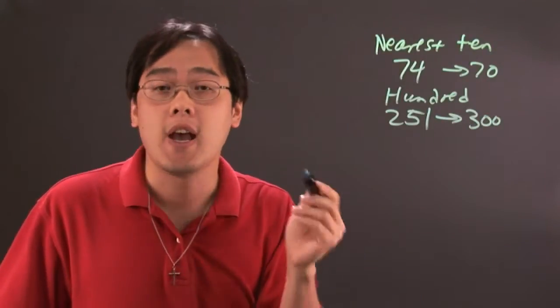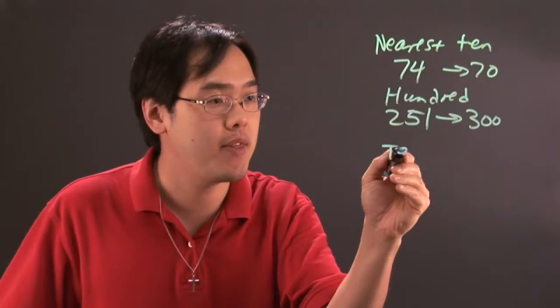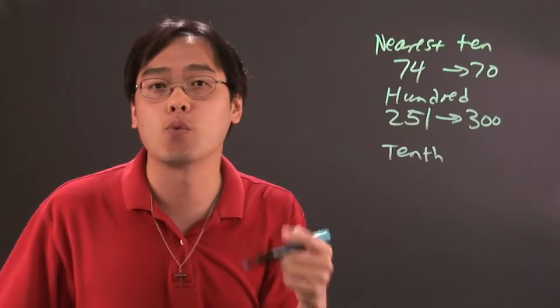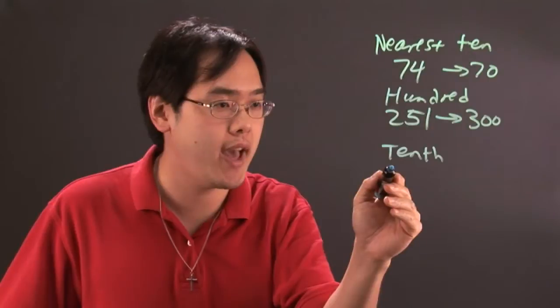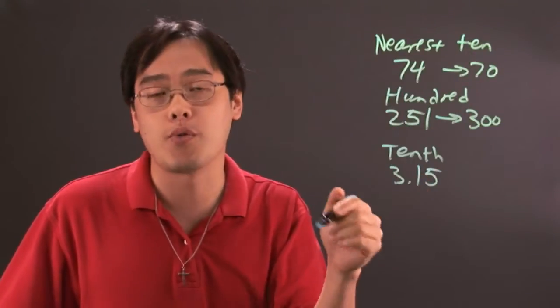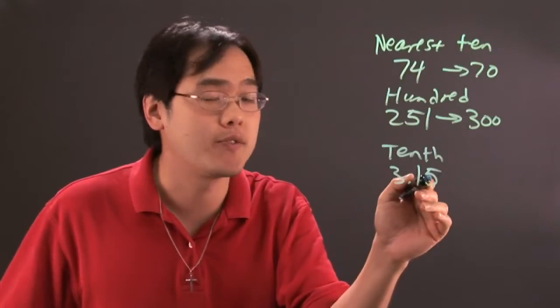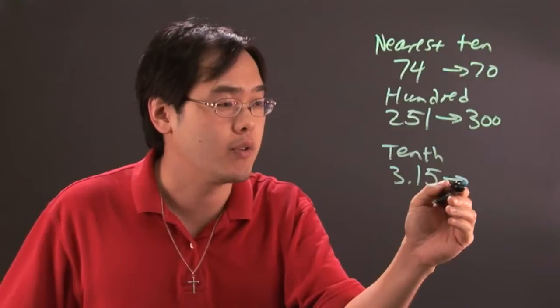Now, if you have other words such as the nearest tenth, you're rounding to the nearest one decimal place. For example, if you have 3.15, it's either going to go to 3.1 or 3.2, and using the rules of rounding, since this is 5 and above, this rounds to 3.2.